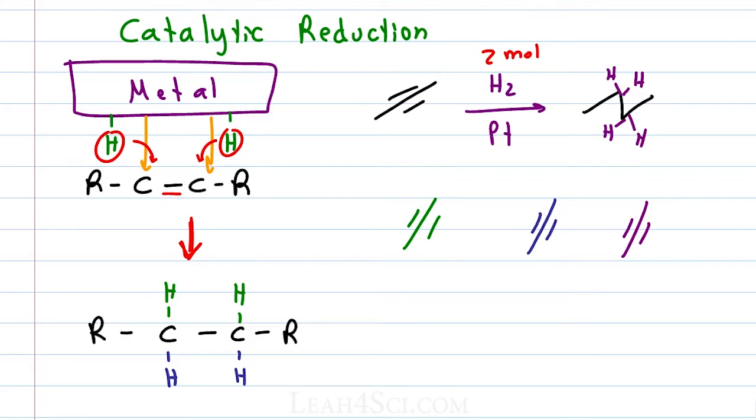The green one might get zero reduction giving you an alkyne as your final product. The blue one might get a double reduction giving you an alkane as your final product. And the purple one might go halfway giving you an alkene product.